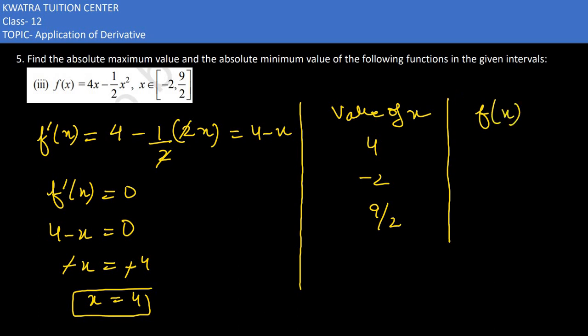So 4 put karo f of x mein. So you have 4 into 4 minus half, 4 square is 16, so 2 into 16 is 8. 4 into 4 is 16, 16 minus 8 is 8. Minus 2 put, so you have 4 into minus 2 minus half, minus 2 square is there.